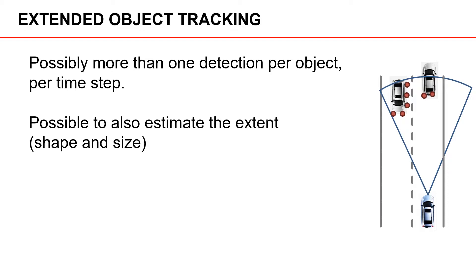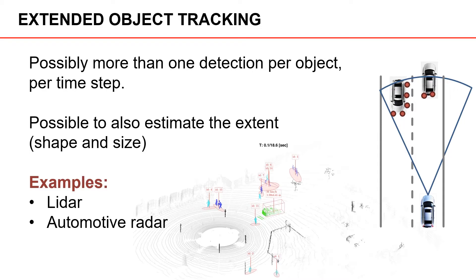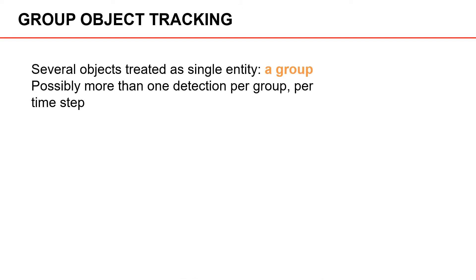If we consider instead the vehicle on the right, we only have two detections and there are no detections located on either the left or right side of the vehicle. In this case we cannot estimate the length of the vehicle, but we can estimate the width. Some examples of extended object tracking scenarios are when radar sensors or automotive radar sensors are used.